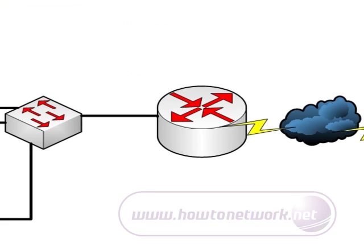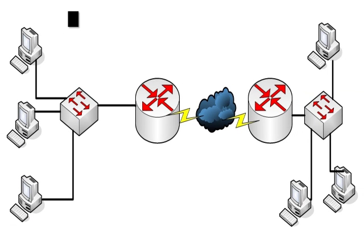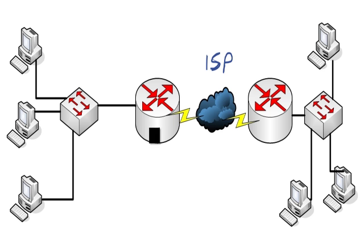Throughout this illustration we'll refer to a diagram to make things easier. Over on the left is our network, and in the middle is our ISP. We could be going anywhere out onto the internet, and we could have other offices in other parts of the country or the world. We've got our local area network here which is what we're in charge of as network administrators, and this is Router A, which belongs to us.